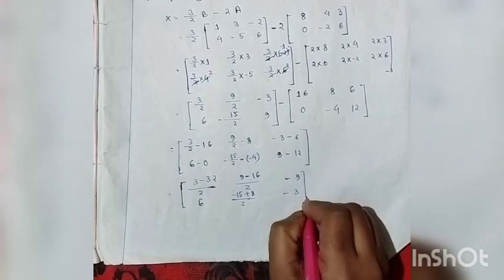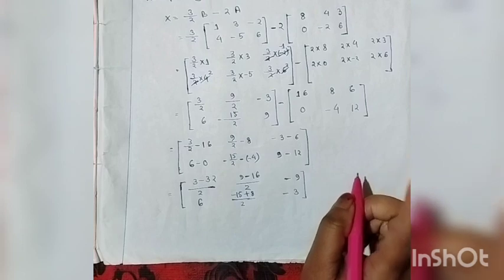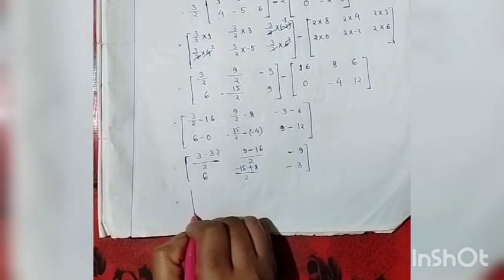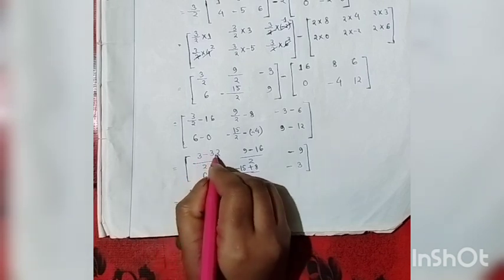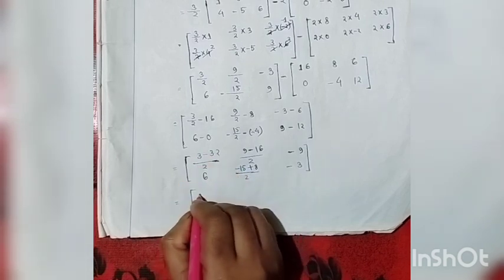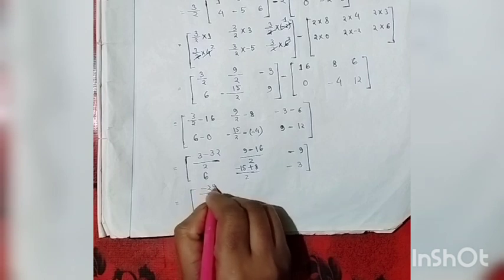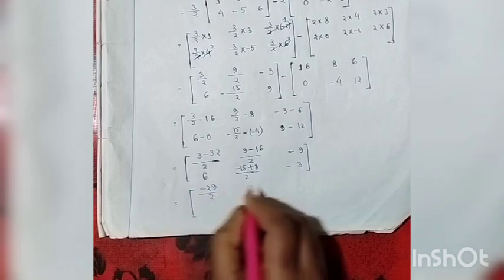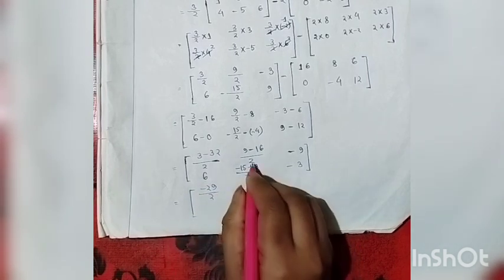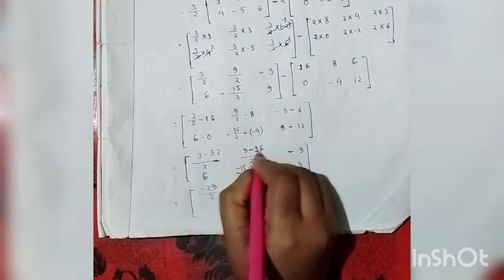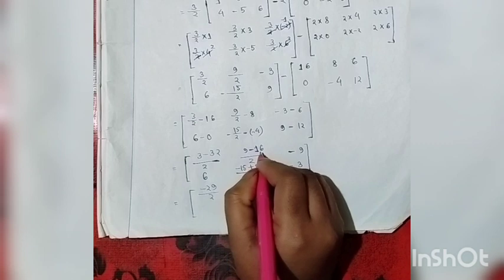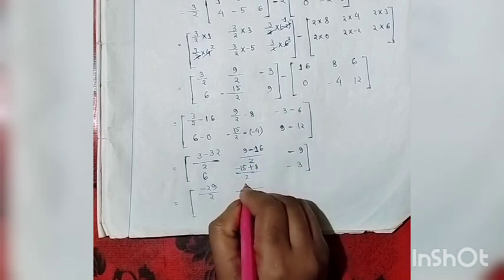Continuing simplification: we multiply through by 2 giving minus 29 divided by 2. Then 6 minus 9 equals minus 3. The final matrix X is a 2 by 3 matrix with computed entries, giving us the solution to the equation 4A plus 2X equals 2B.